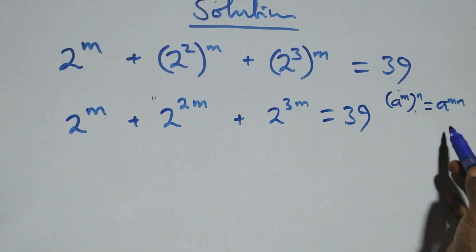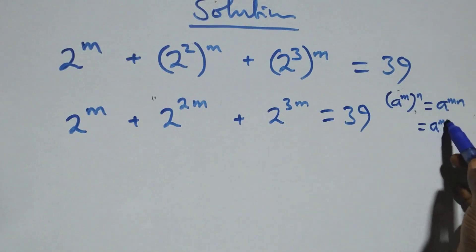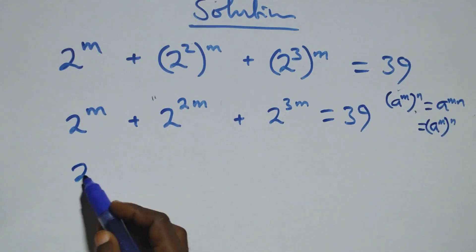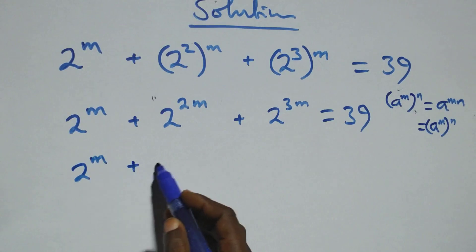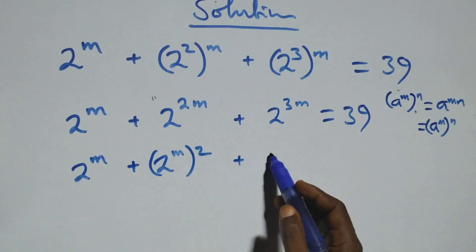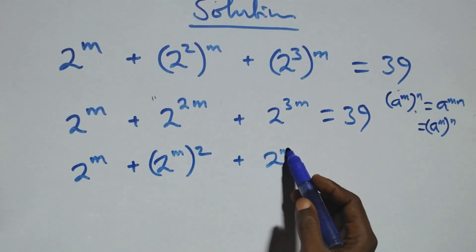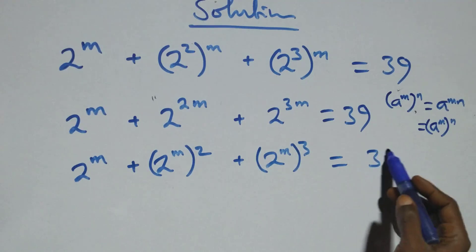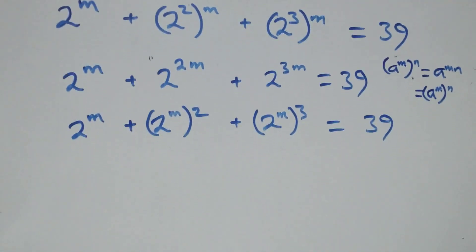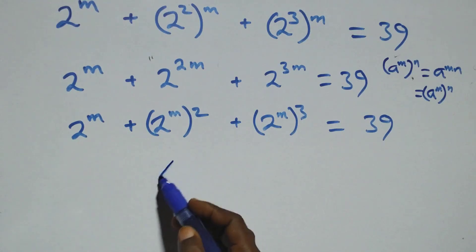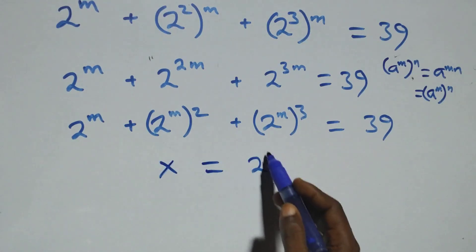We can also rewrite this — when we have a raised to power m raised to power n — we can take 2 out and we have 2 raised to power m, plus 2 raised to power m raised to power 2, then plus also 2 raised to power m raised to power 3, equals to 39. Then from here, we represent 2 raised to power m with the letter x, so we can say: let x equal 2 raised to power m.